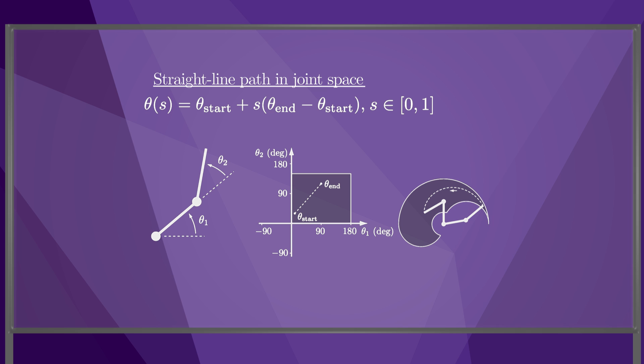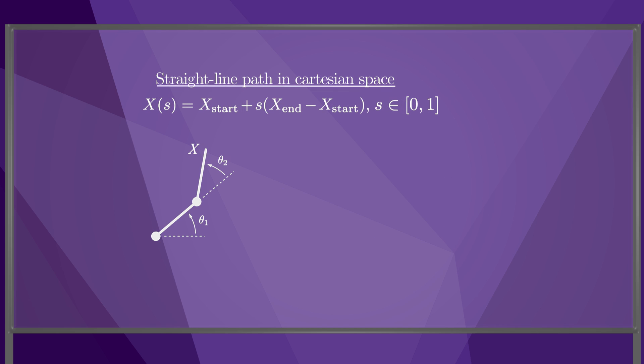If we prefer a straight-line motion of the end effector in Cartesian space, we can define x to be the coordinates of the end effector and define a straight-line path as shown here. Then we have to use inverse kinematics to solve for the robot configuration at each point along the path. As you can see here, some straight lines in Cartesian space cannot be executed as they pass outside the workspace.